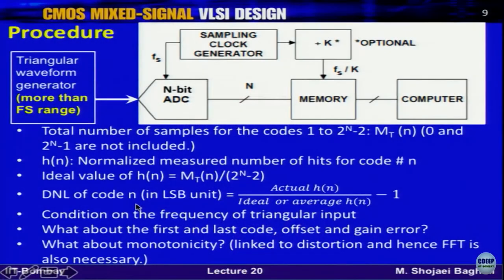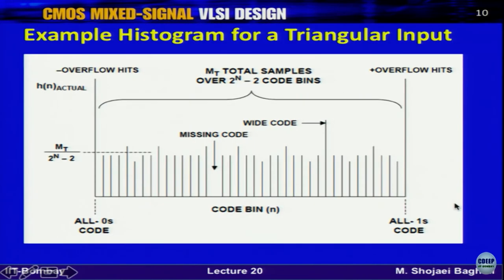Some constraints must be kept in mind for this histogram method. From the next lecture, we will start combining topics alternately — actually three topics alternately — which fits the mixed-signal nature of the course. This also prevents monotony from having only the data conversion topic.